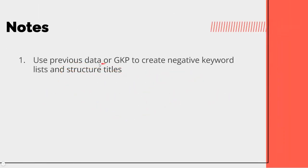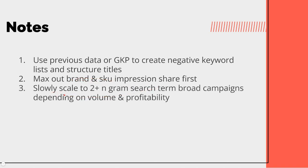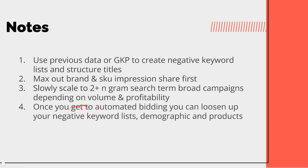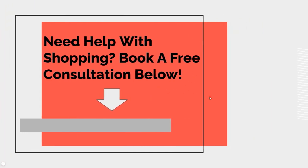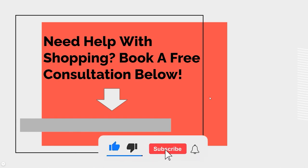To recap: use previous data or Google Keyword Planner to create negative keyword lists and structure titles. Max out brand and SKU impression share first. Solely scale to two-plus N-gram search terms with broad campaigns depending on volume and profitability. Once you have automated bidding, loosen your negative keyword list, demographics, and products to scale more profitably. If you found this helpful, reach out for a free consultation, leave comments or questions, like the video, and subscribe for more content like this.